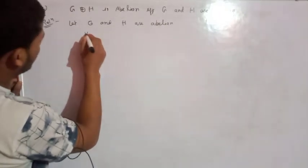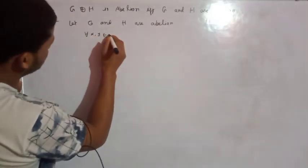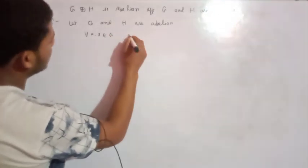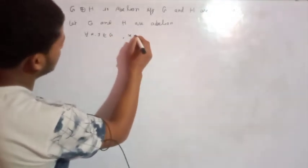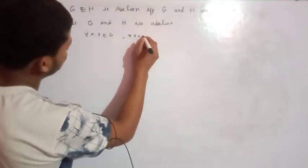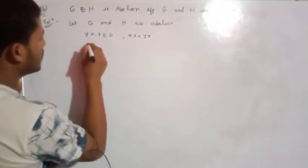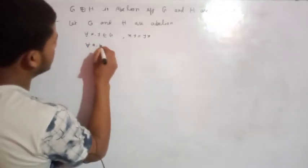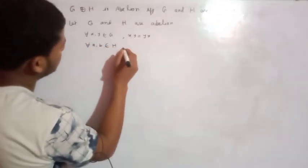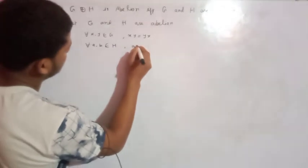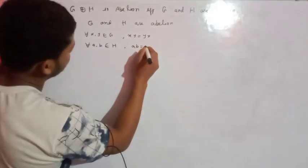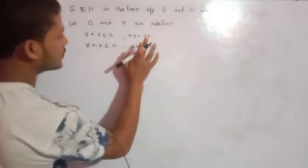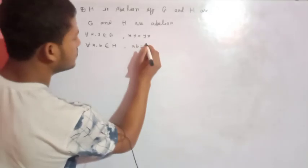For all x, y belonging to Z: xy is equal to yx. For all a, b belonging to H: ab is equal to ba.